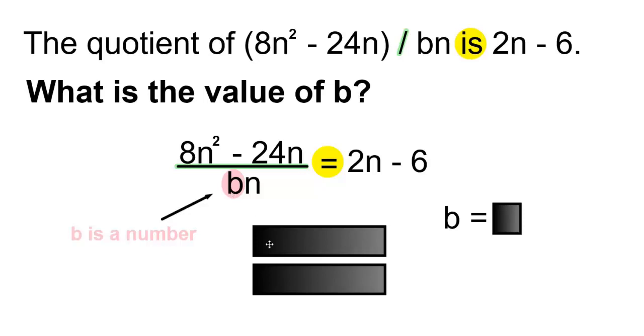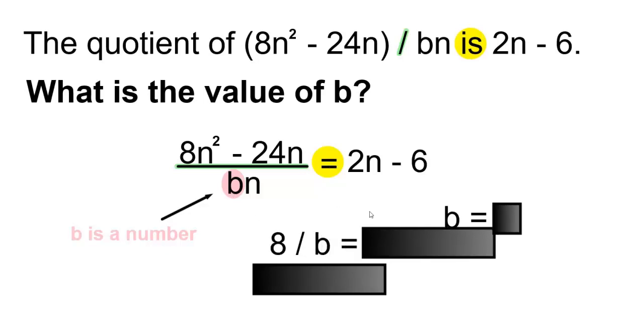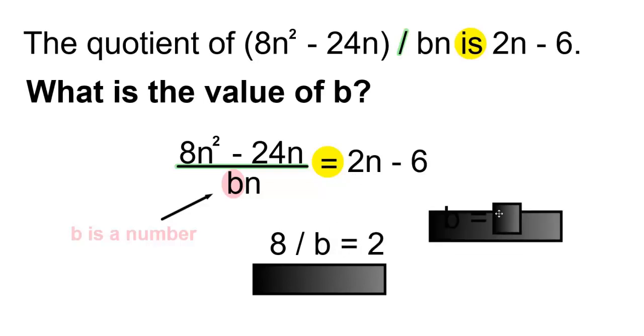8 divided by b is equal to 2, and n² divided by n¹ means you subtract the exponents, and 2 minus 1 is 1, so that'll be 2n.